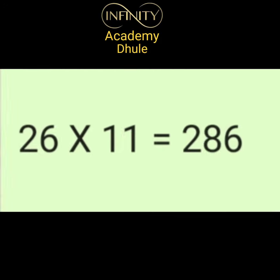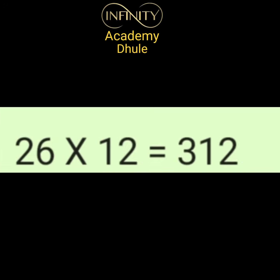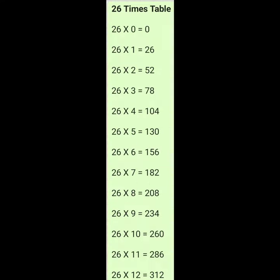26 elevens are 286. 26 twelves are 312. Let's repeat: 26 ones are 26, 26 twos are 52, 26 threes are 78, 26 fours are 104, 26 fives are 130, 26 sixes are 156, 26 sevens are 182, 26 eights are 208, 26 nines are 234.